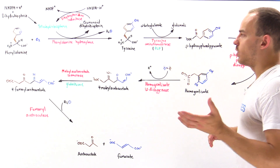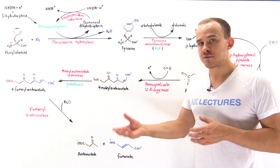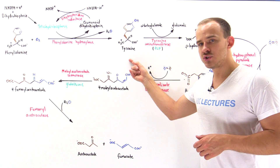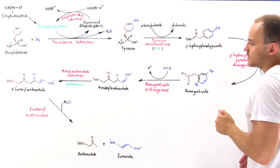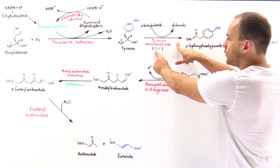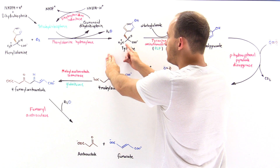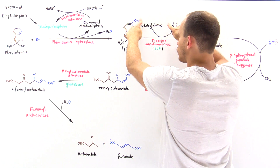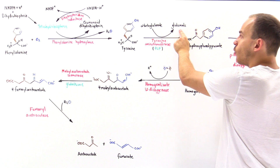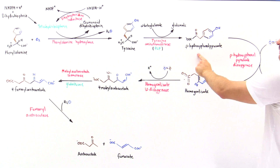Once we form tyrosine, the next step requires an aminotransferase to transfer the alpha amino group from tyrosine onto an alpha-ketoacid. The enzyme tyrosine aminotransferase, like all aminotransferases, uses PLP (pyridoxal phosphate). The alpha amino group is transferred from tyrosine onto alpha-ketoglutarate; the alpha-ketoglutarate receives the amino group to form glutamate, while removal of the amino group from tyrosine produces the alpha-ketoacid p-hydroxyphenylpyruvate.